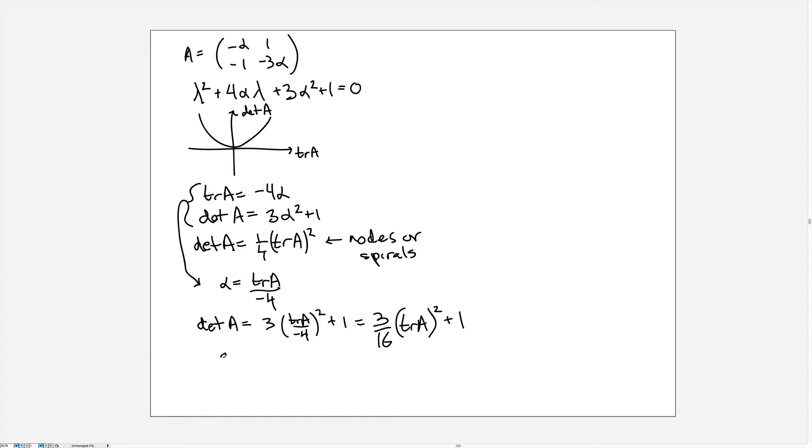Now what's clear from this is that 3 over 16 is less than 1 over 4. So the parabola that we get for this curve, in other words if we plot the trace and determinant for each value of alpha, we would plot a series of points that has a lower amplitude than this curve, which is determinant of A equal 1 quarter trace of A squared. But then we're shifting it up by 1. So it's a flatter parabola but starts higher. So that means I'm going to have to draw a parabola like this.